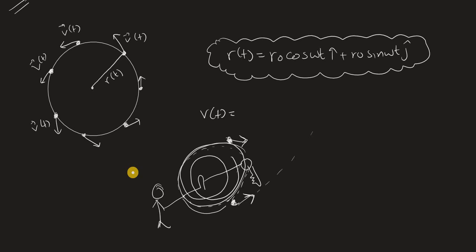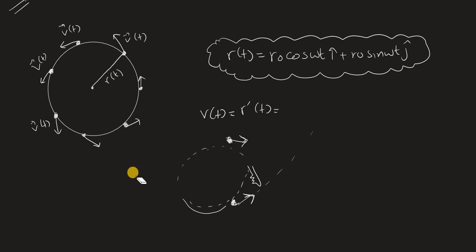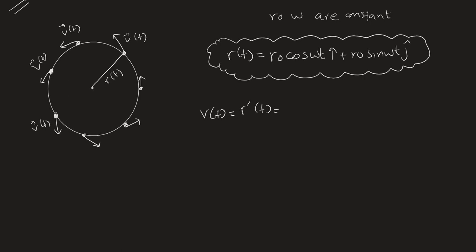So the velocity is tangential to the circle. To find velocity, we take the derivative of the position function. Remember that r0 and omega are constants here, so they stay as-is when differentiating. Let me note the derivative rules: the derivative of sin(x) is cos(x), and the derivative of cos(x) is negative sin(x).